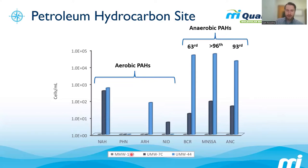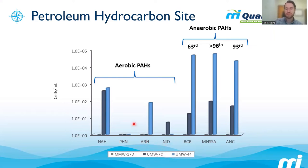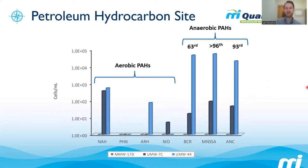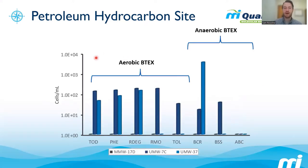Looking at the data: well 17D is an unimpacted background well with no BTEXs or PAHs, and we see no functional gene targets related to PAH degradation detected there — which makes sense. The upgradient well 7C shows a good potential for aerobic PAH degradation, while our downgradient well 44 has a really high potential for anaerobic PAH degradation. Looking at BTEX degraders from the same site: aerobic BTEX degradation on the left, anaerobic on the right — anaerobic potential downgradient is pretty high for BTEX, while upgradient aerobic is the better potential.